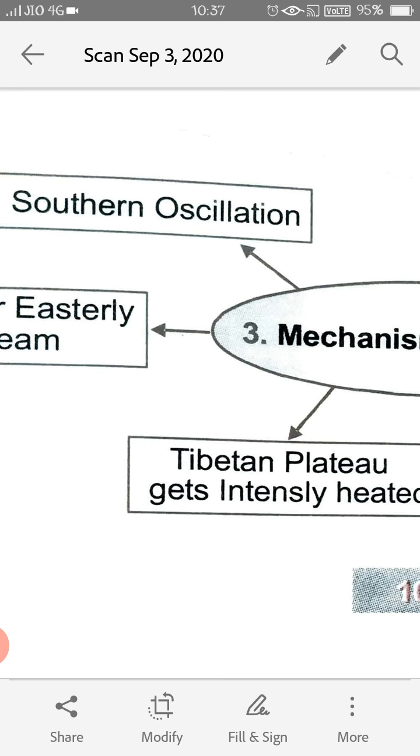Now first of all, I'd like to explain you about the Southern Oscillation, what it really means. This is the periodic change in pressure condition that is known as the Southern Oscillation. The changes in the pressure area is known as the Southern Oscillation.